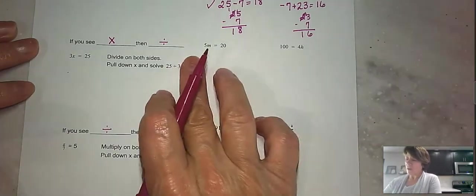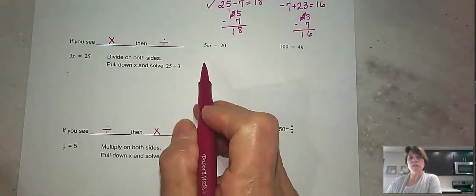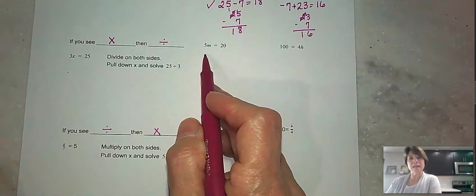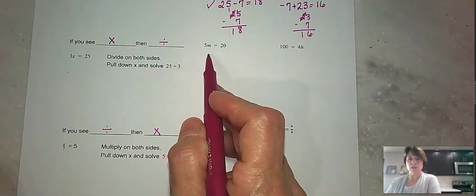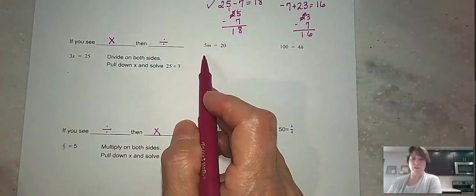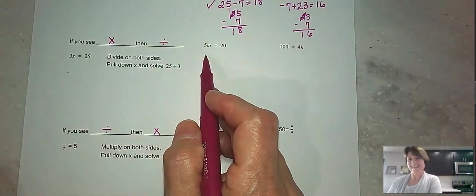So we've got 5 times n. Remember that when you see a number, which we call a coefficient, next to a variable, that operation is multiplication. So be careful. Remember that another way that we can show multiplication is with a dot.